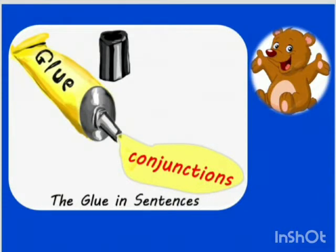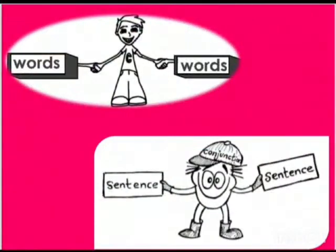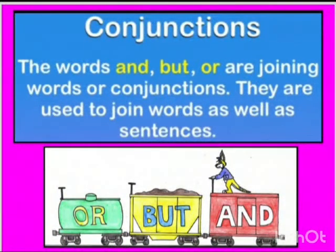Conjunctions, that is, joining words — they work as a glue in joining the sentences. They help to join two words and also two different sentences by making them one sentence. The words 'and', 'but', and 'or' are joining words, or conjunctions. They are used to join words as well as sentences.